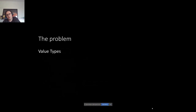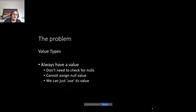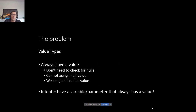What is the problem? In .NET, we have value types. Value types always have a value — you don't need to check for nulls, you cannot assign null to them. The intent of a value type is clear: these variables should always have a value. As a parameter, the intent of the developer is that a value is expected and should be passed. As a property or return type, the intent is that there is always a value to expect.